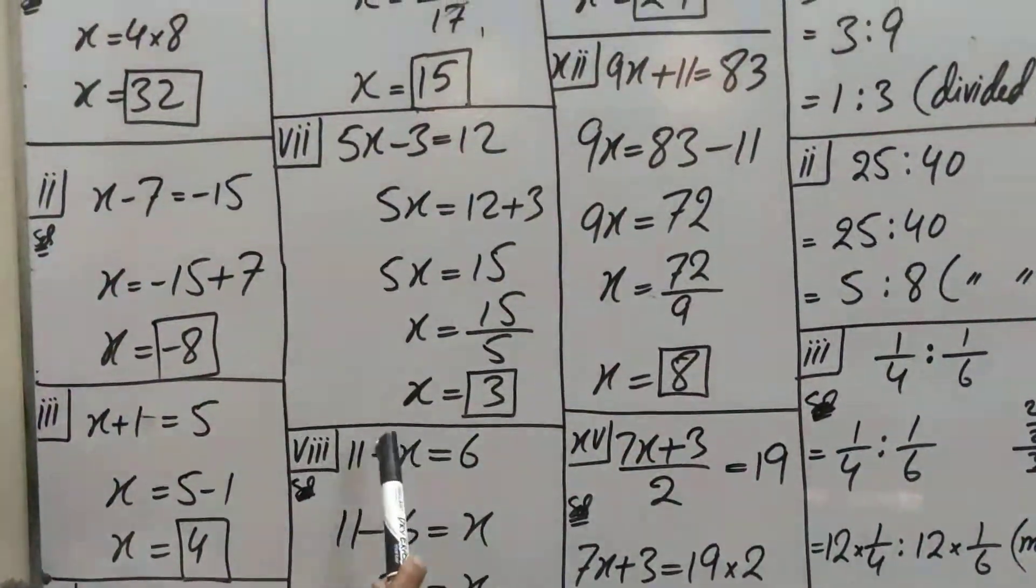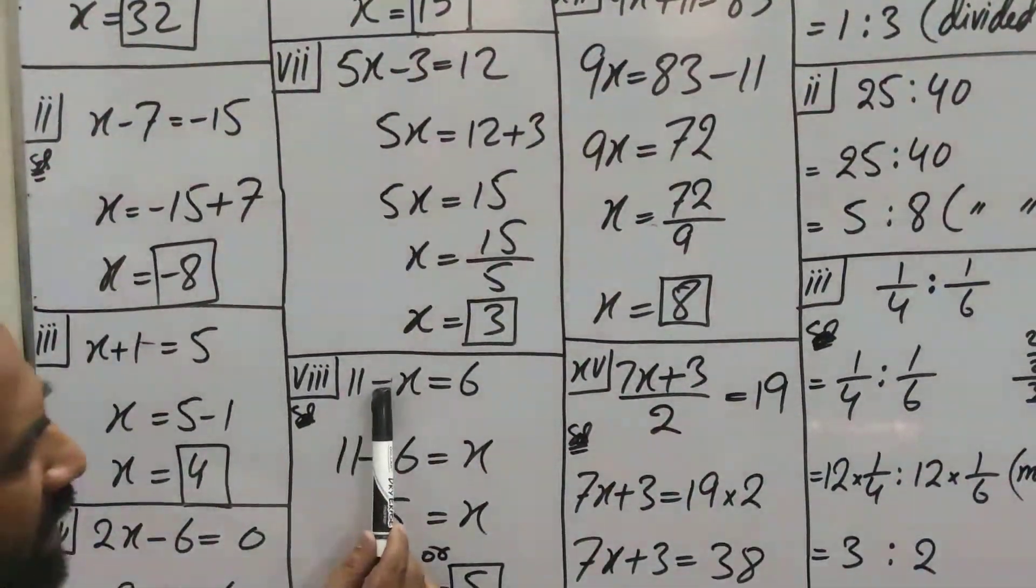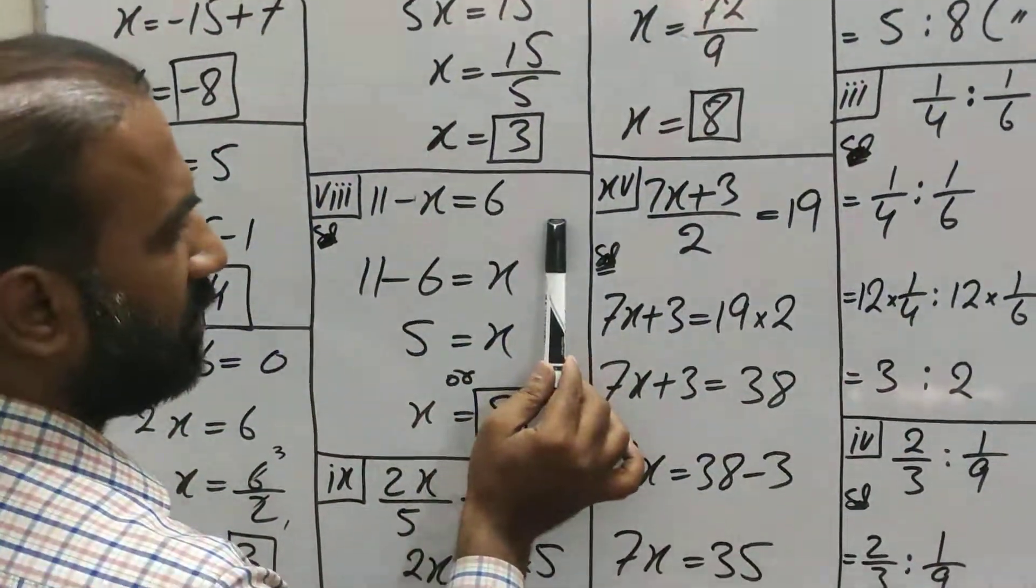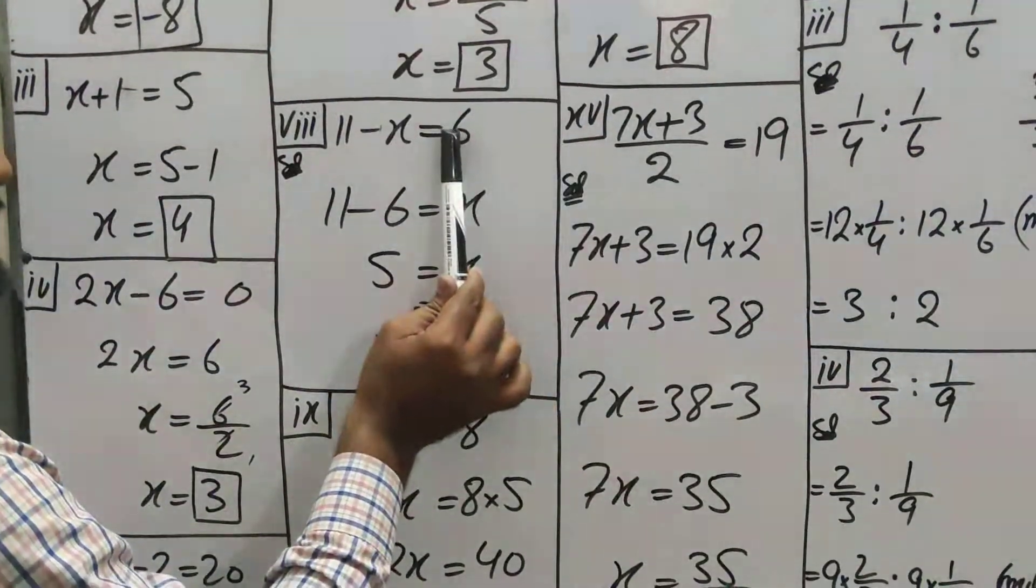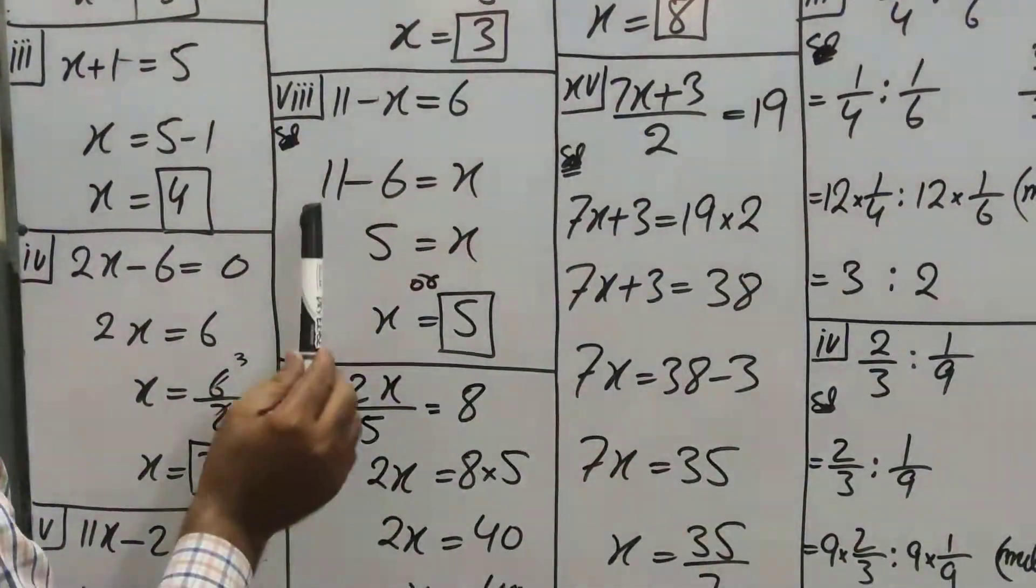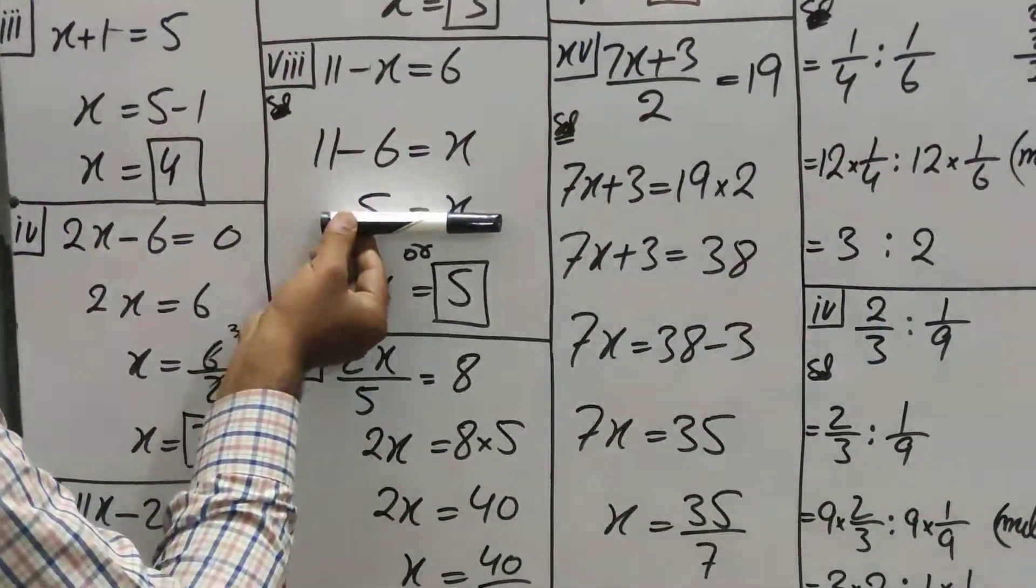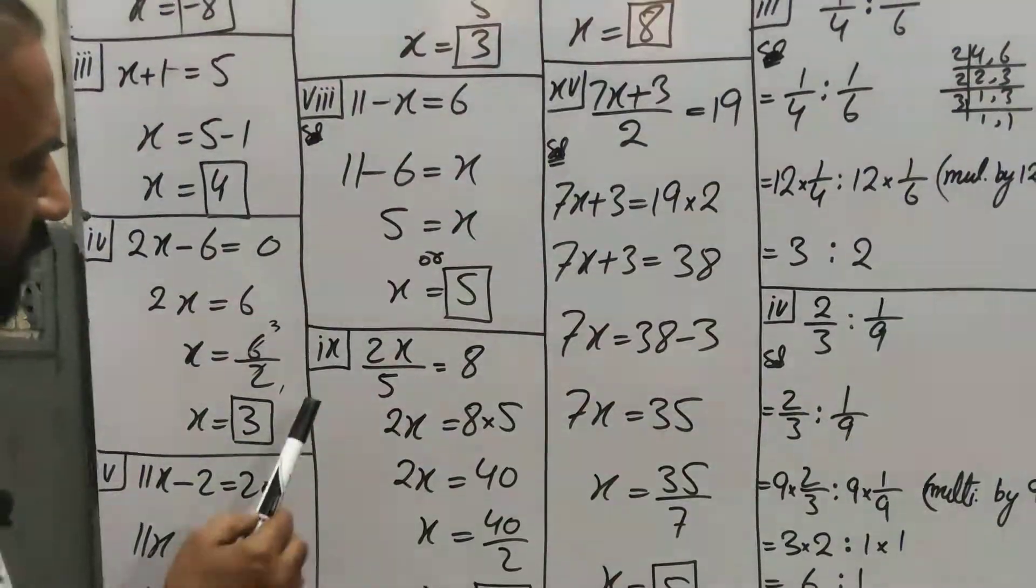This part, this is -x and this is +11. So we take x to the other side. This -x goes there as +x. This +6 is here as -6. 11 - 6 = 5. Let's change places and write it like this. Now this is 9th part.